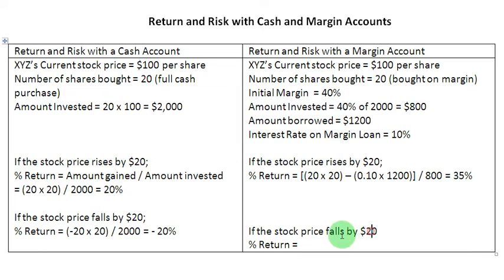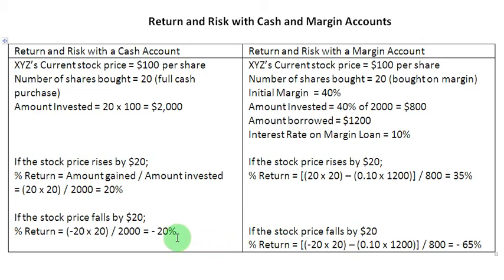Now let us see what happens to the percentage return when the stock price falls by $20. Since the price is falling by $20, we write minus 20 applicable to all 20 shares, meaning we are losing $400. And still we have to make the interest payment of 0.10 times $1,200, that is $120. Dividing by the $800 invested gives a return of negative 65%. If you use a margin account and you are losing money, your losses are also magnified — compared to a loss of minus 20% with a cash account, you lose 45% more money with a margin account.